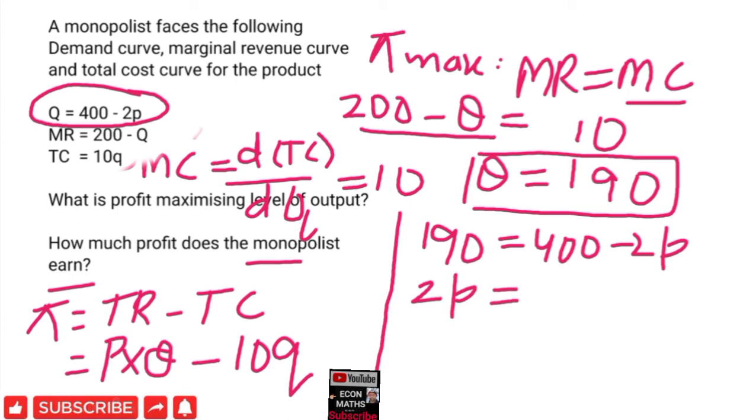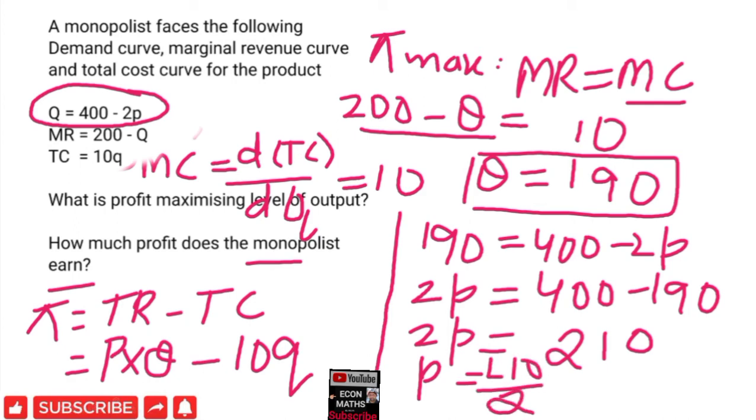400 - 190. What is 400 - 190? Zero minus zero is zero, ten minus nine equals one, and three minus one equals two. So 2P = 210, which implies P = 210 ÷ 2.